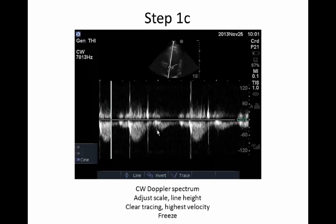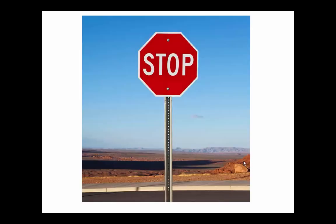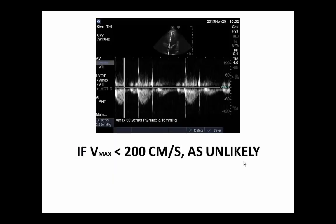When you have the tracing with the highest velocities and the clearest image, freeze it and make your measurements. If their maximum velocity is less than 200 centimeters per second, aortic stenosis is not very likely — you can stop, no more calculations needed, and move on. However, if the velocity is higher and you're still worried about aortic stenosis, then continue and we'll go through what you do next. In severe cases you may need to go up to 500 on the scale.